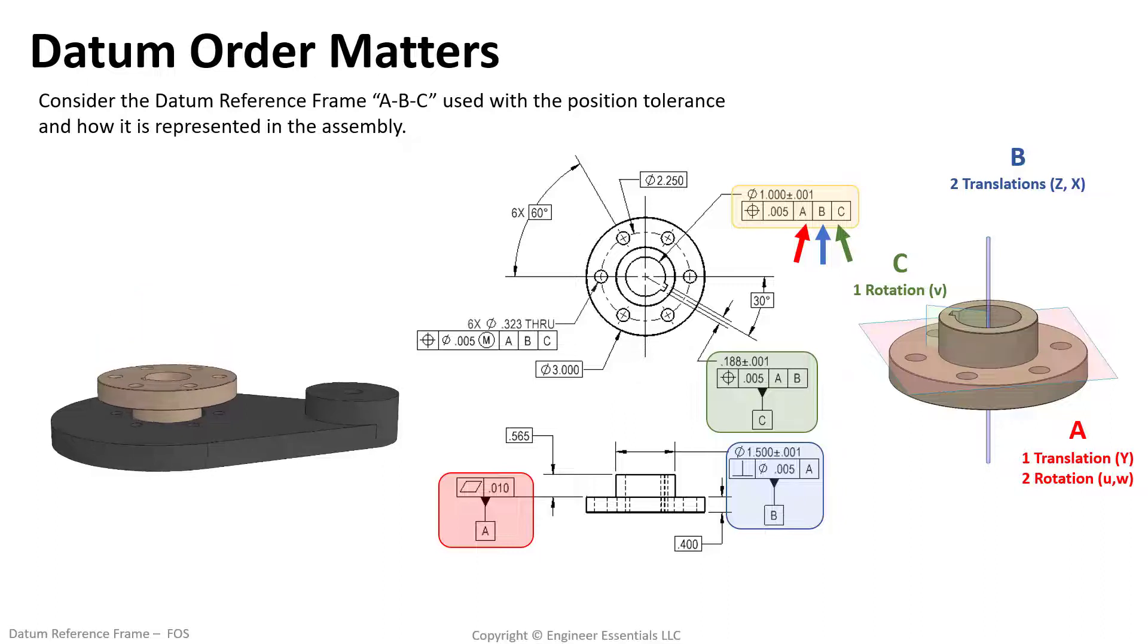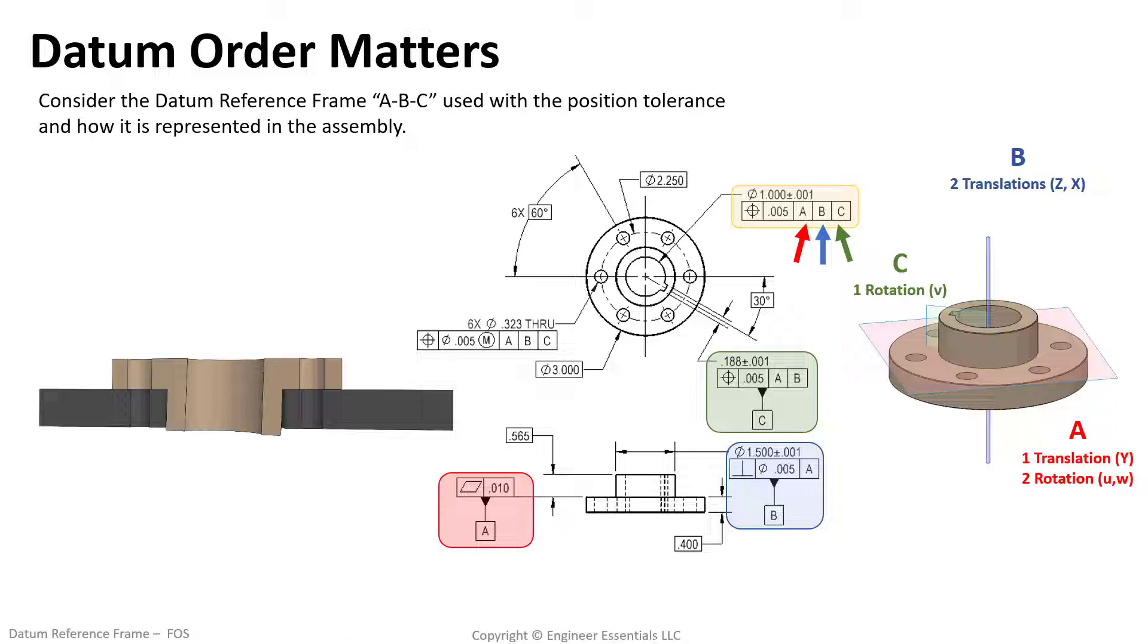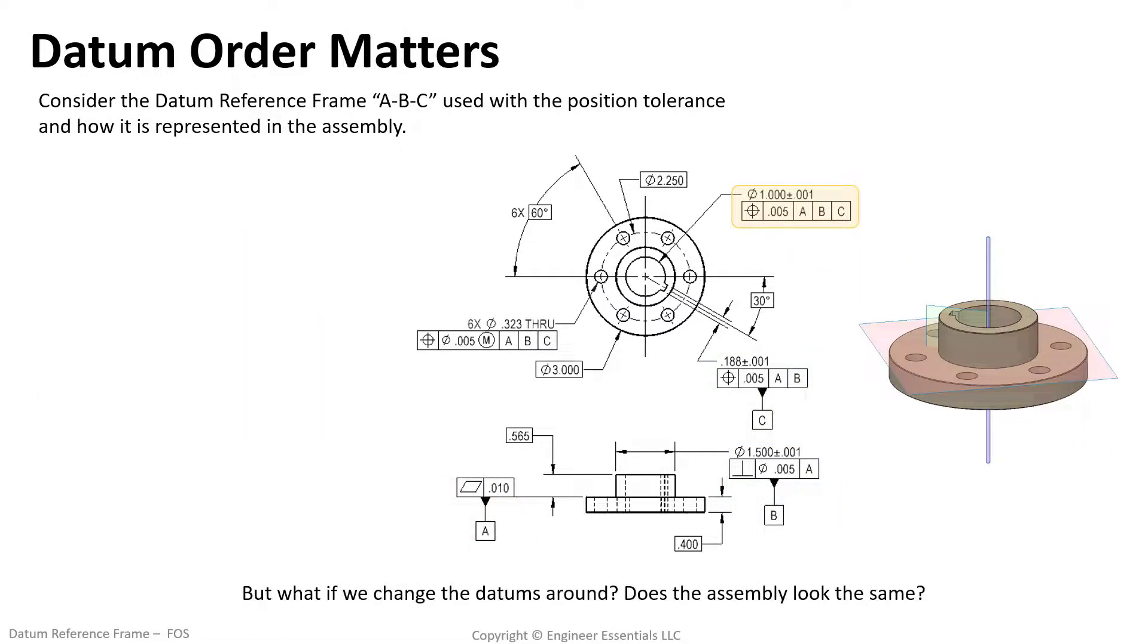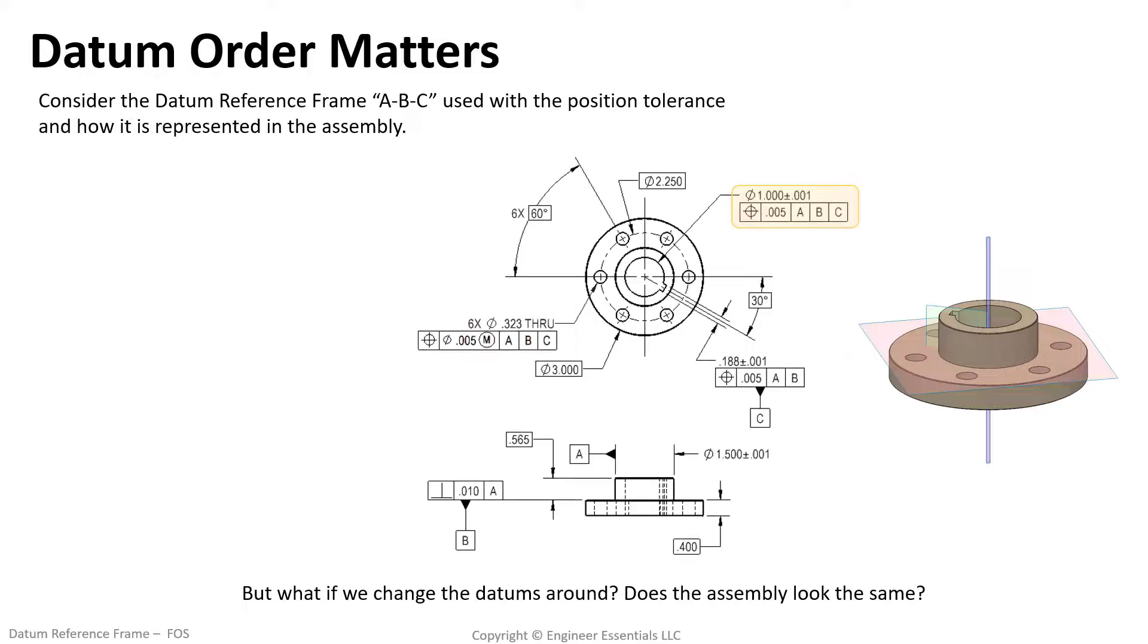Watch as our part connects with its mating part in the full assembly. Notice the plane that is datum feature A engages first regardless of the orientation of the boss, that is datum feature B. As a good brain exercise what happens if we change up the design of this part a little bit? Notice here I've swapped around the datums. Datum feature A is now the cylinder. That means datum A will lock down four degrees of freedom: two translations, two rotations.